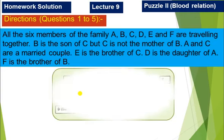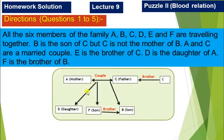Let's see our diagram. Here is our diagram. B is the son of C. C is not a mother, it's a father. A and C are married couple. So if C is father, A is mother. E is the brother of C. D is the daughter of A. F is the brother of B. If both are brothers, A and C will be their father and mother. So this is our diagram.